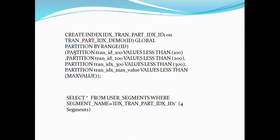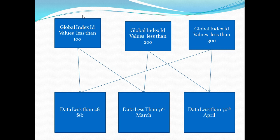Unlike local indexes where partitions were dynamically generated at runtime, when using global partitioning strategy, as soon as I execute this statement I will have four segments allocated for this index. Local partition indexes map one-to-one with table partitions, but global partition indexes have different boundaries. A single global index partition may have values corresponding to multiple table partitions — for example, id values less than 100 could include dates less than 28 Feb and also dates less than 31st March.